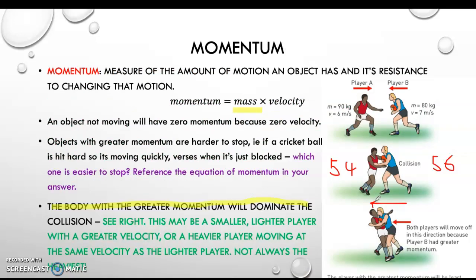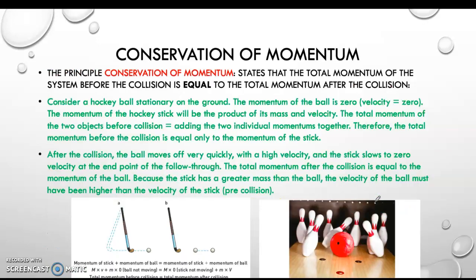That's it in a nutshell — let me know if you have any questions about that. You're about to do some questions from your book, so that will force you to really think about it. We then move on to conservation of momentum, which is probably one of the harder examples to talk about, because there can be other things at play that we don't really think about in the study design. The conservation of momentum means that the total momentum of the objects before the collision will equal the momentum after the collision.